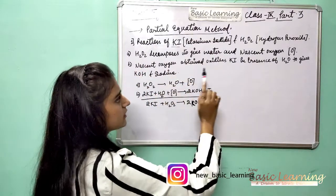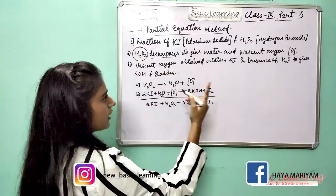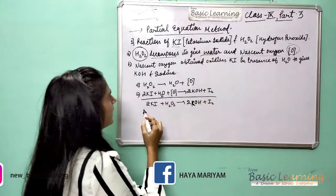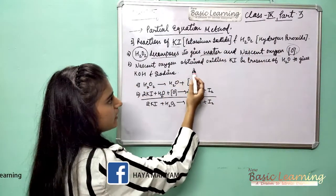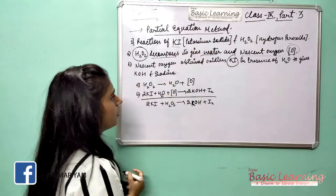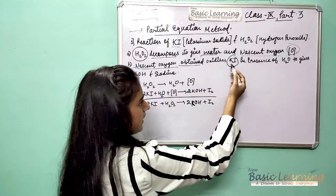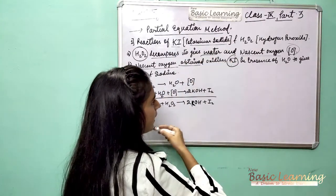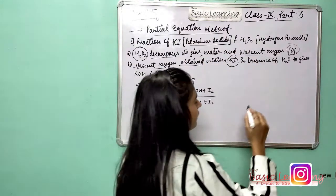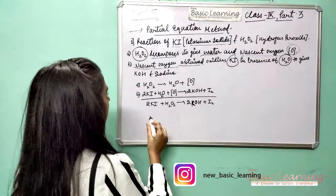Then nascent oxygen obtained oxidizes KI, potassium iodide, in the presence of H2O. You have to keep this in mind, in the presence of H2O, that is water, to give KOH and iodine.